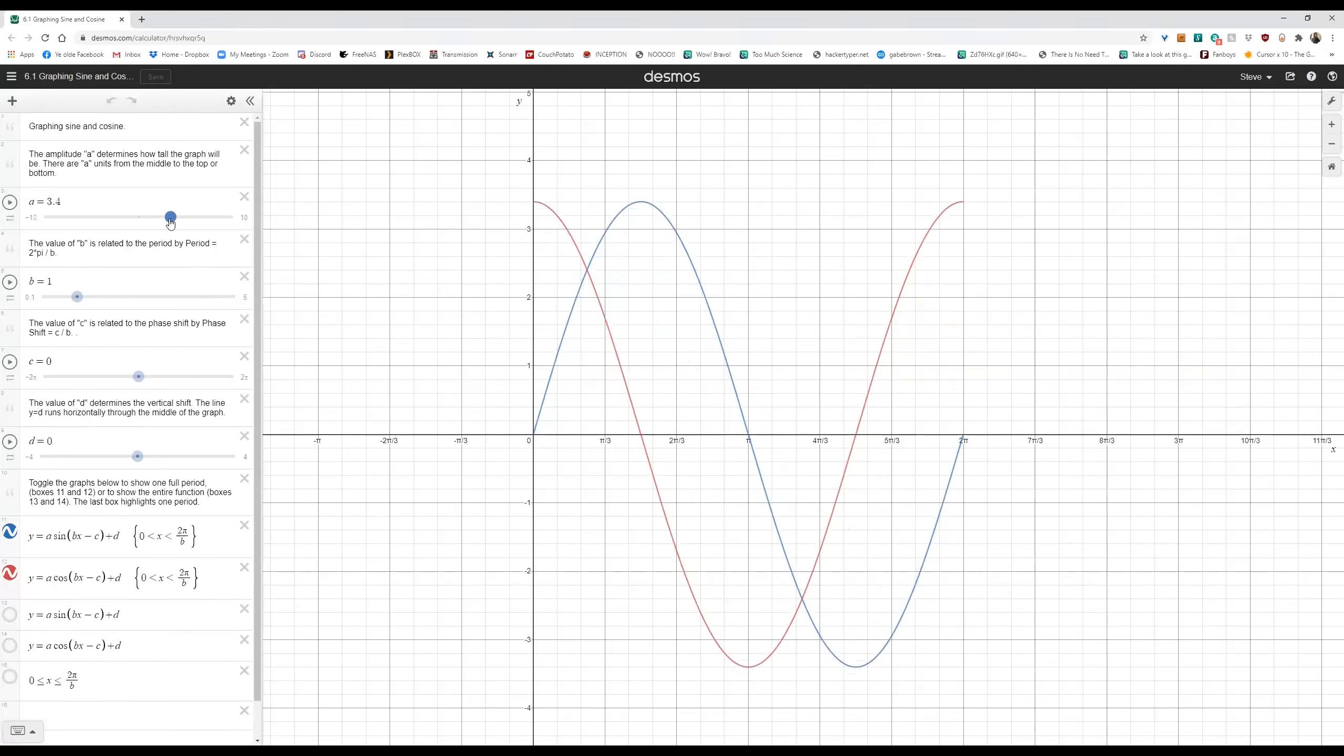So as I move a up here towards 5, I can see that it stretches the graph up to be quite a bit taller than it used to be. So changing a is going to change the amplitude of that graph. Larger values of a will stretch it up, whereas small values of a would shrink it down.